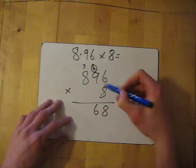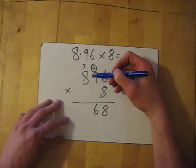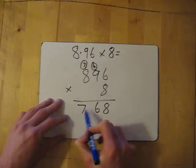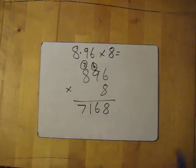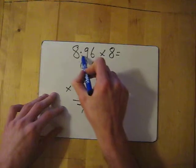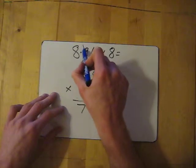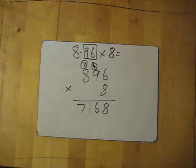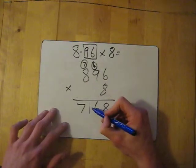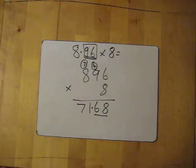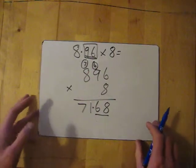Carry the 7. 8 times 8 is 64, add the 7 gives me 71. Now I think about decimal places. I look at the question: how many numbers are after the decimal place? I've got two. So in my answer I have to have two. Pop it in, simple. The answer is 71.68.